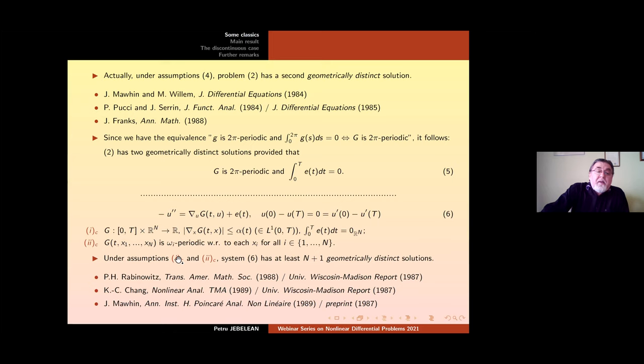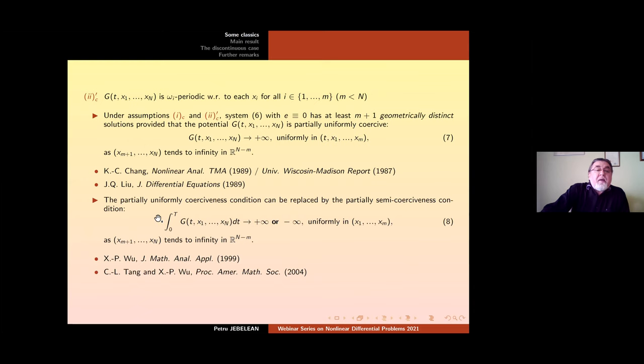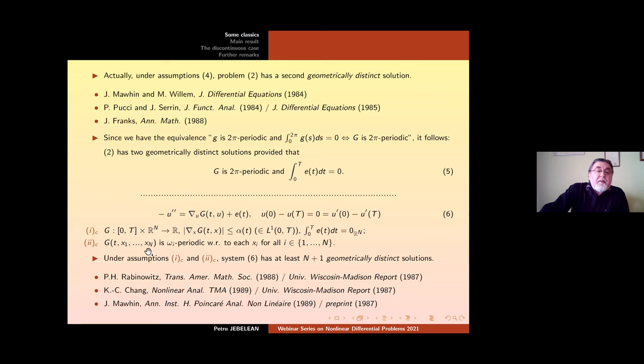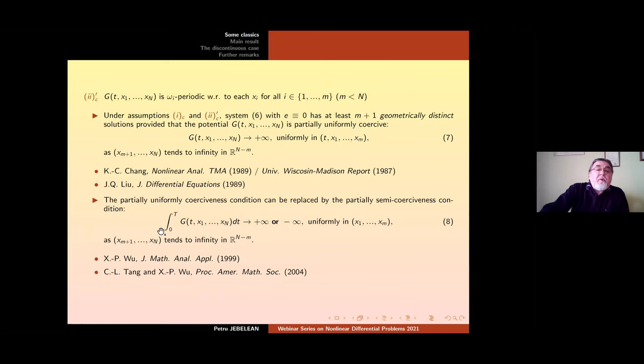Published, was independently obtained in 1987. Published very close in 1989, 1988, 1989. Now, here we have assumed that the capital G is periodic with respect to all the x components. What happens if we have the periodicity only with respect to a part of these variables? Namely, we replace condition 2C by 2C prime.